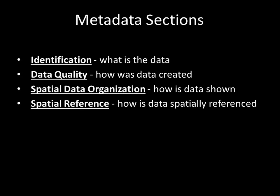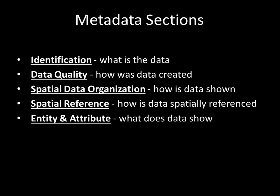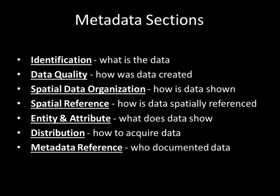Additional sections include: Spatial Reference, or how is the data spatially referenced in terms of coordinate systems used to reference features in the dataset; Entity and Attribute, or what does the data show and what are the attributes associated with each feature such as rows and columns; Distribution, or how to acquire the data in terms of a person, organization, and contact details; and Metadata Reference, or who created and documented the metadata and their contact information.